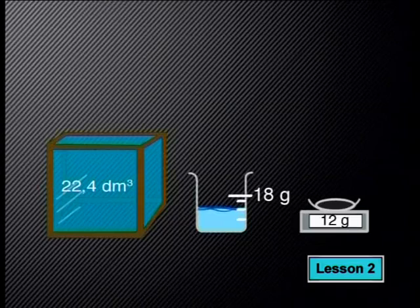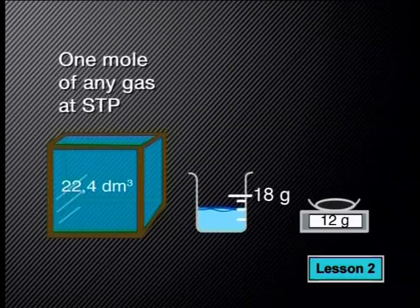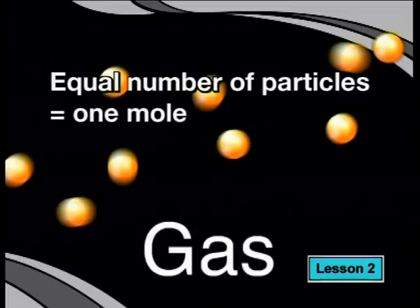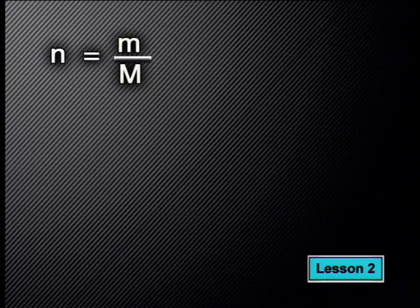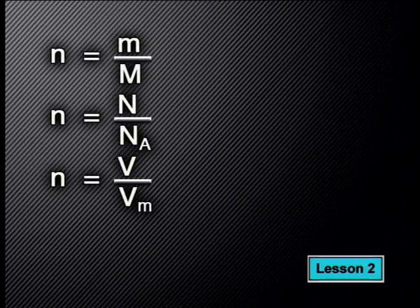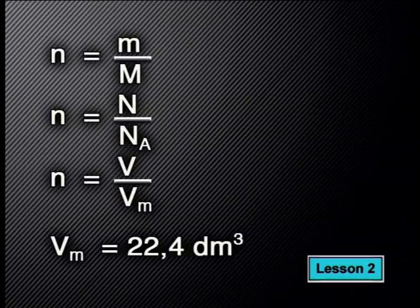Scientists discovered that one mole of any gas has a volume of 22.4 decimetres cubed. This means that a box with a volume of 22.4 decimetres cubed would contain one mole of any gas at STP. This is quite a large volume compared to one mole of water, which is a liquid, or one mole of carbon, which is a solid — because the particles of a gas are actually very far apart from each other. We give this volume of one mole of gas at STP a special symbol, Vm. In the same way that we have a relationship for moles and mass and moles and number, we can write a relationship for moles and volume at STP: n equals V divided by Vm, where n is the number of moles, V is the volume of the sample, and Vm is the volume of one mole, or 22.4 decimetres cubed.